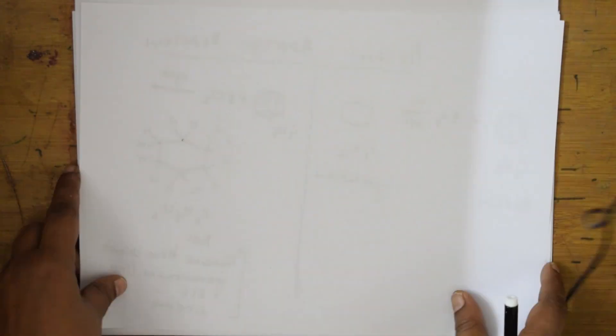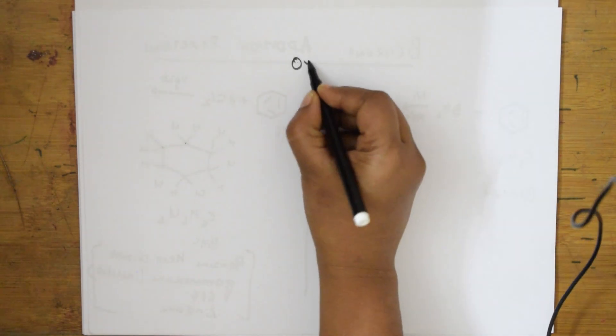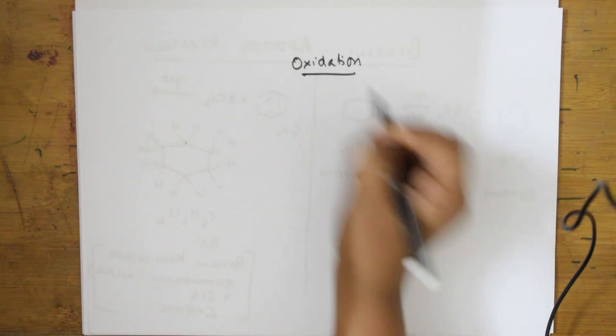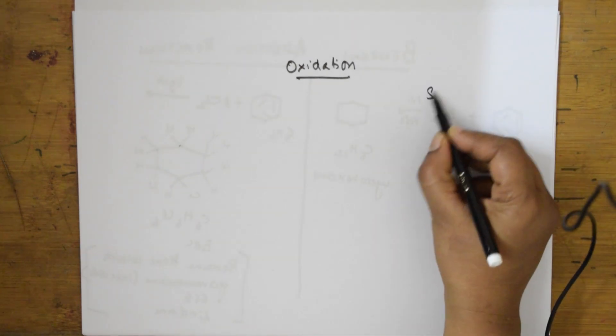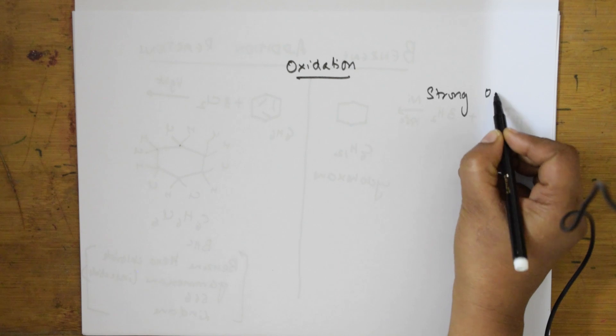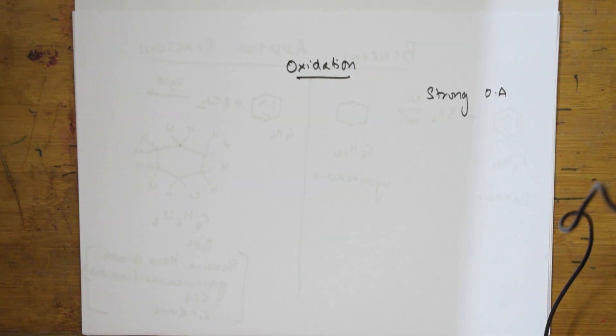Now let us come back and see the next type of reaction of benzene, that is oxidation reactions. Whenever you are speaking about oxidation you require strong oxidizing agents. The strong oxidizing agents include alkaline KMnO4.